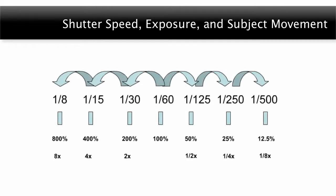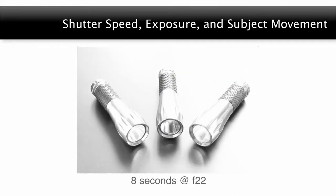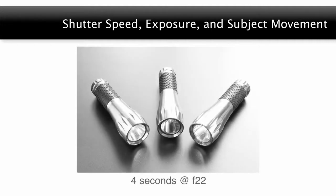Shutter speeds are measured in fractions of a second. Moving a full stop from one adjacent shutter speed to the next allows either double or half the amount of light through, depending on which way you move. For example, having an original shutter speed of 1/60th of a second and then moving to 1/125th of a second will allow half the amount of light through. The images currently on your screen were taken with a one-stop decrease in exposure value by only changing the shutter speed.